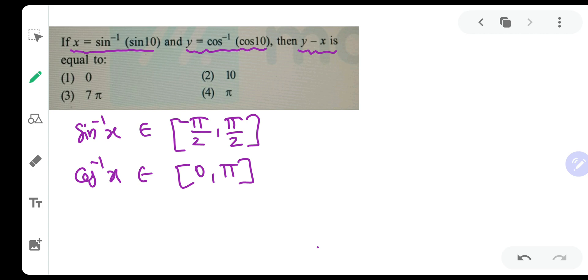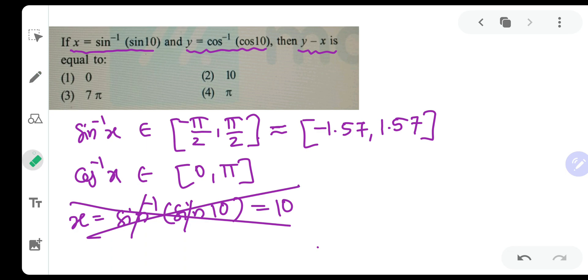So x is equal to sin inverse of sin 10. Suppose some of you try to cancel this and write down the answer as 10. But does 10 lie in this particular range? This particular range can approximately be called as pi is 3.14, so it will be 3.14 by 2 minus 1.57 and this will be 1.57. Definitely, 10 does not lie in this range. It means this answer is wrong. So we need to make a few changes.